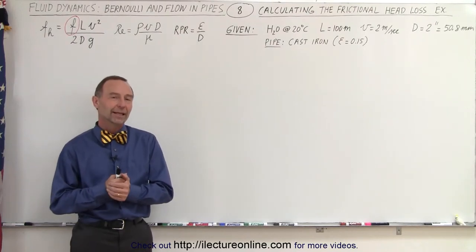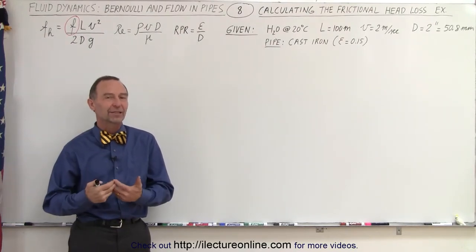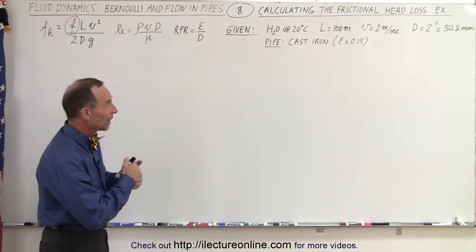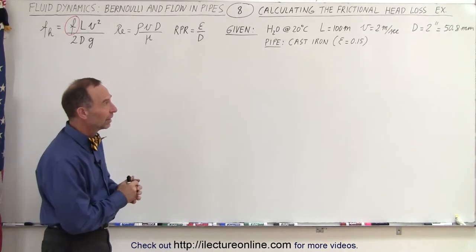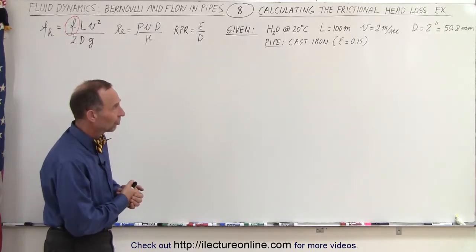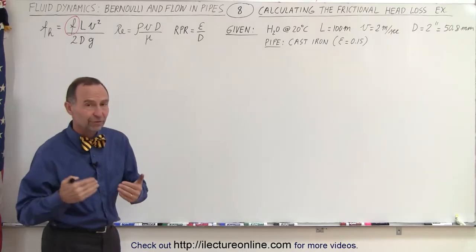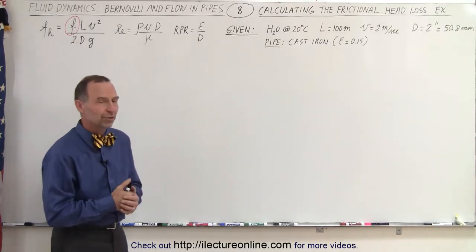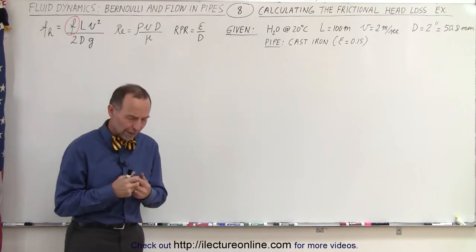Welcome to our lecture online. In this example we're going to calculate the frictional head loss in this particular instance where we have a pipe that's 100 meters long. It's made out of cast iron. It has a diameter of 2 inches, a length of 100 meters, and the velocity of the fluid flowing through it, water at 20 degrees, will be 2 meters per second. So how do we go about doing that?